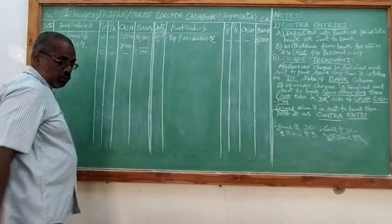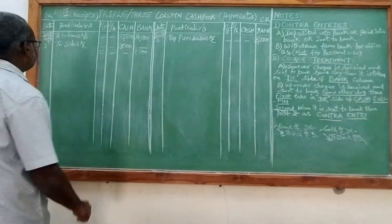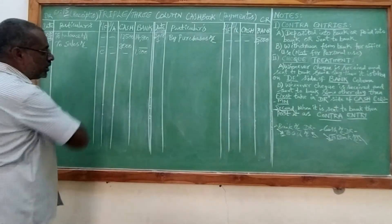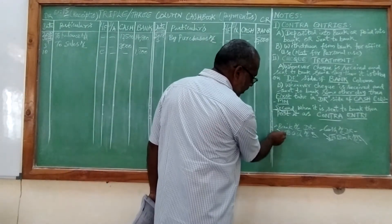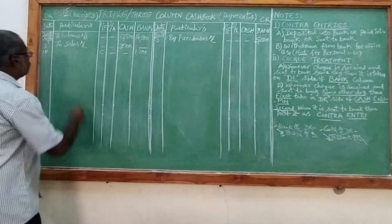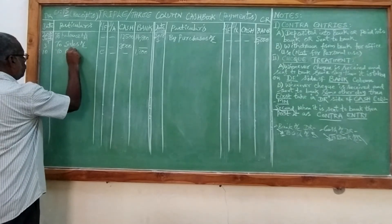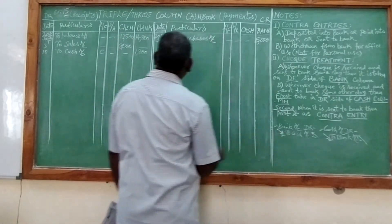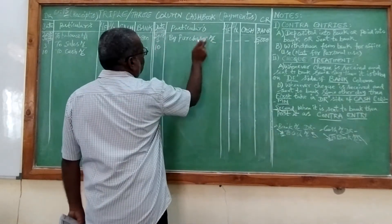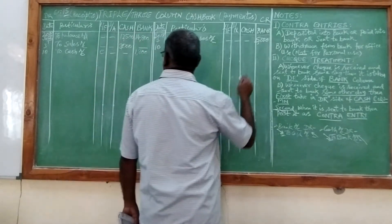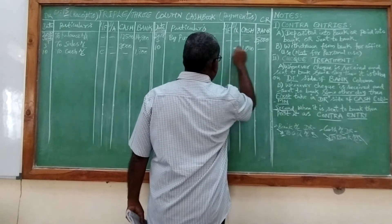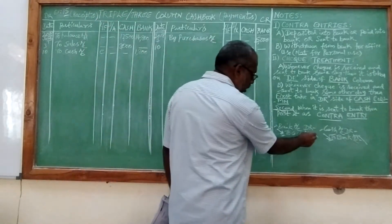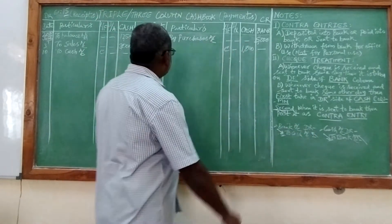In the LF column, C denotes contra. The date is 10th, and the particulars will be the opposite account — what is opposite to bank? It is cash. So I put 1,300 in the bank column on the debit side. On the payment side, the cash column gets 1,300, the LF column C denotes contra, and the particulars — opposite to cash is bank. So I'll take bank account on the credit side.